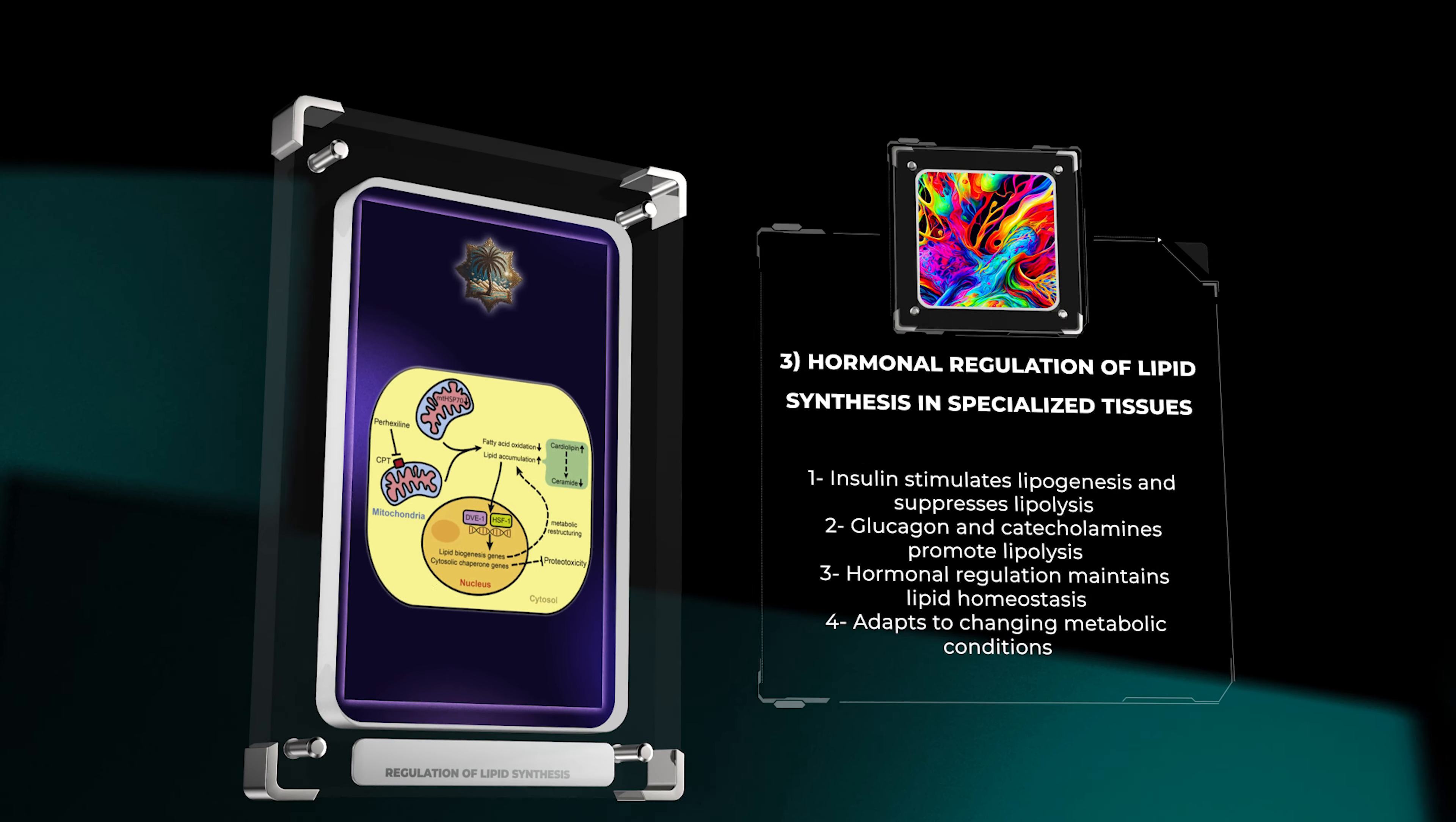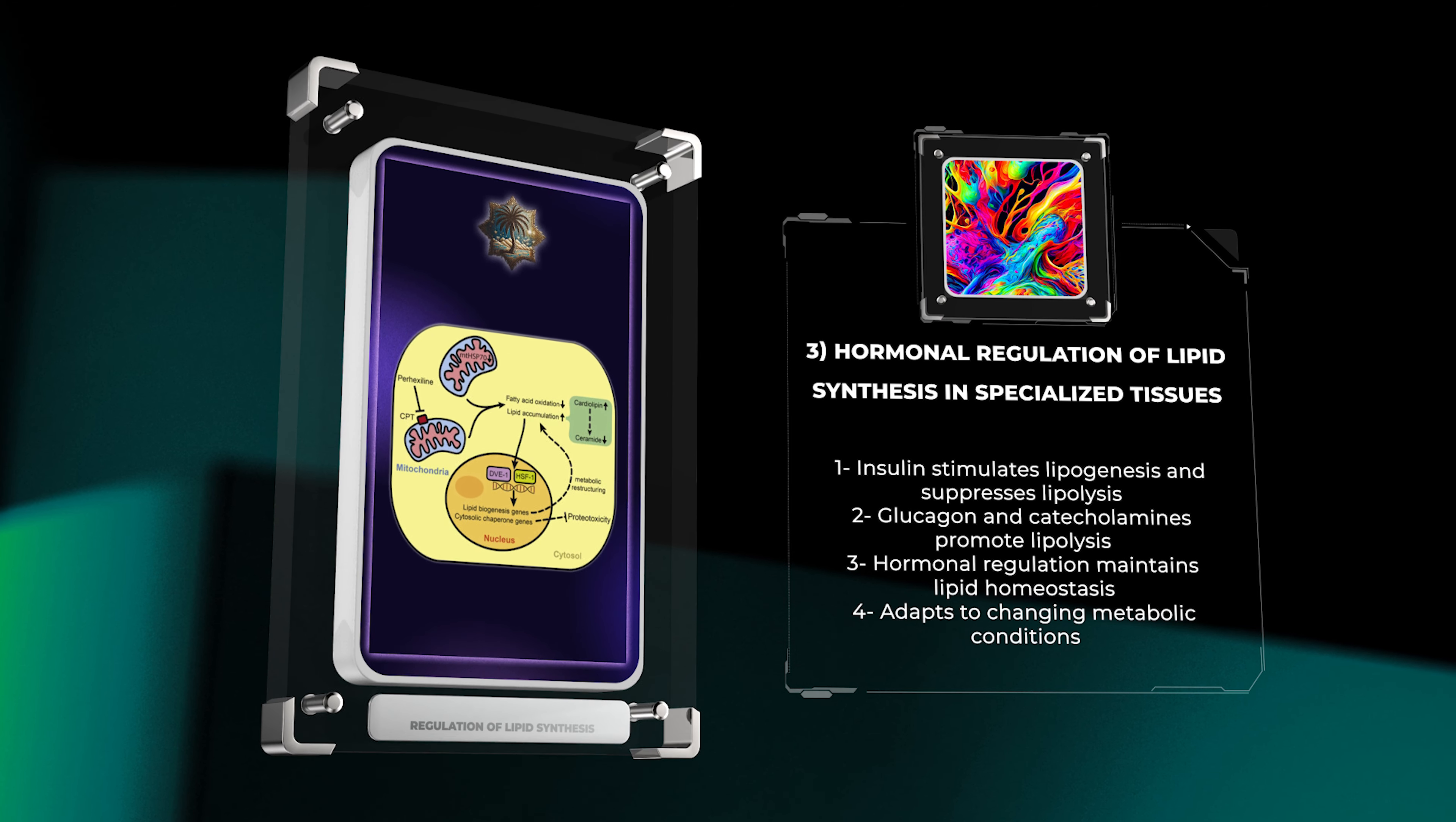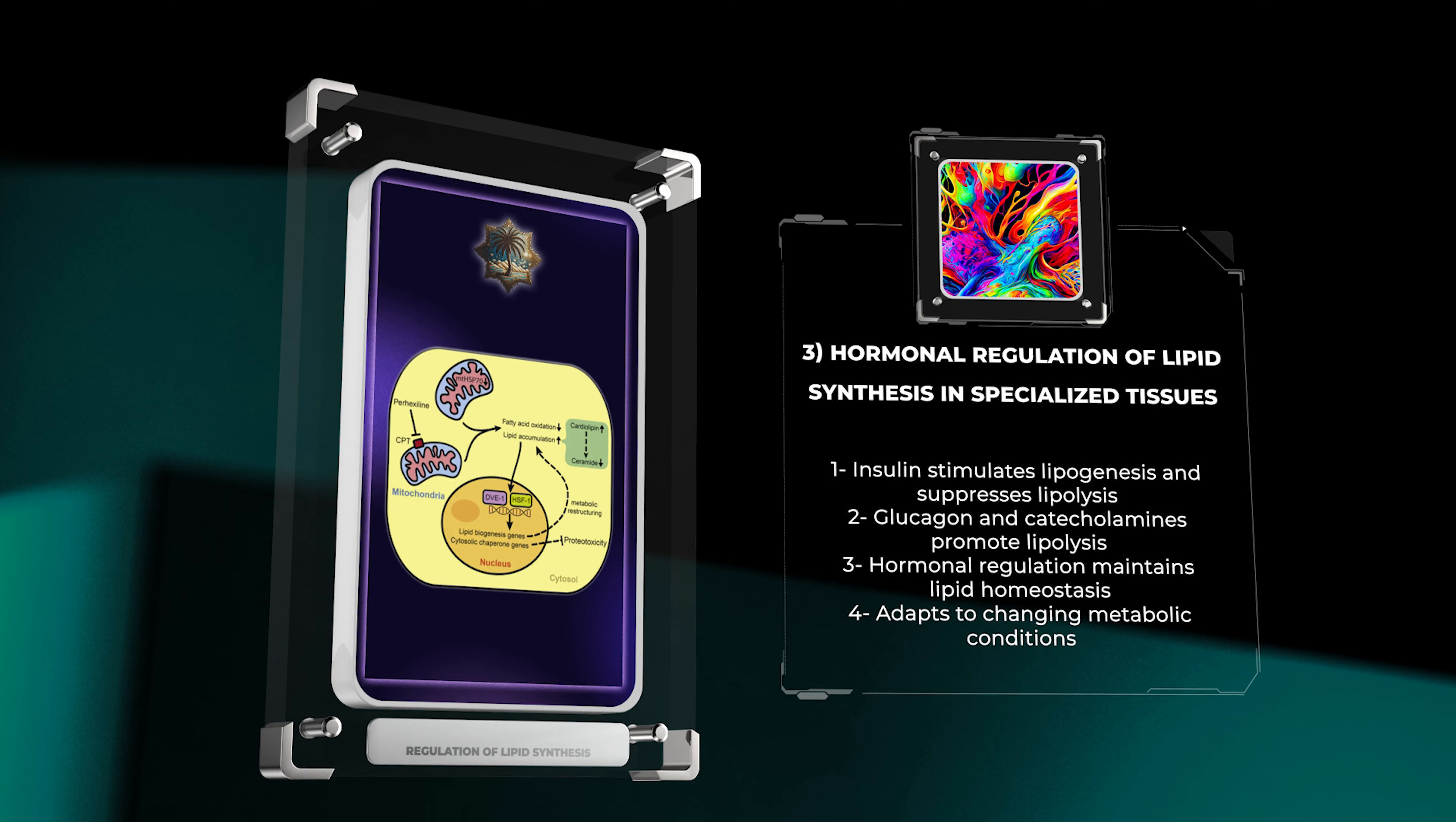On the other hand, glucagon and catecholamines promote lipolysis, allowing the release of stored lipids during fasting or energy-demanding activities. Hormonal regulation plays a crucial role in maintaining lipid homeostasis and adapting to changing metabolic conditions.